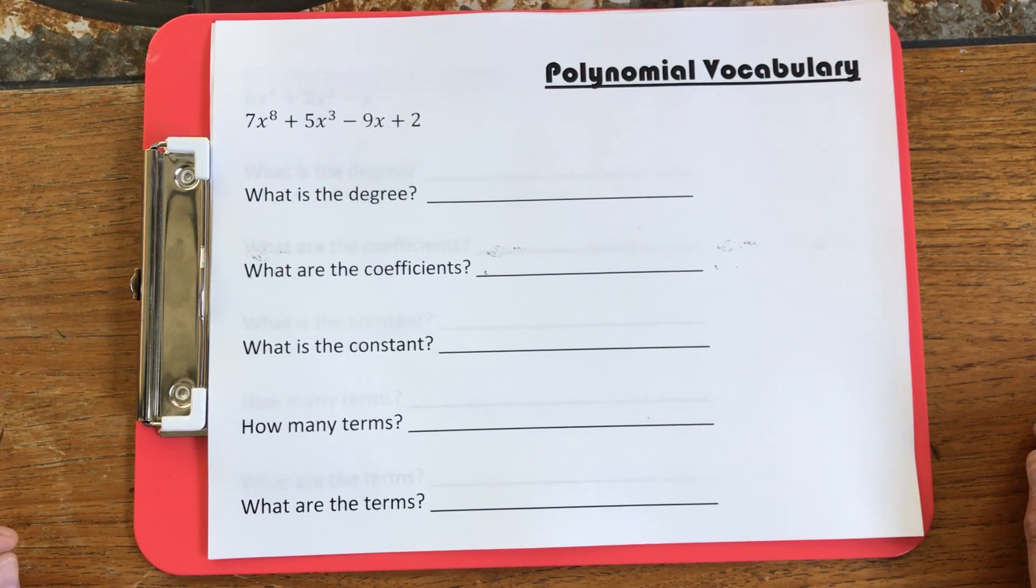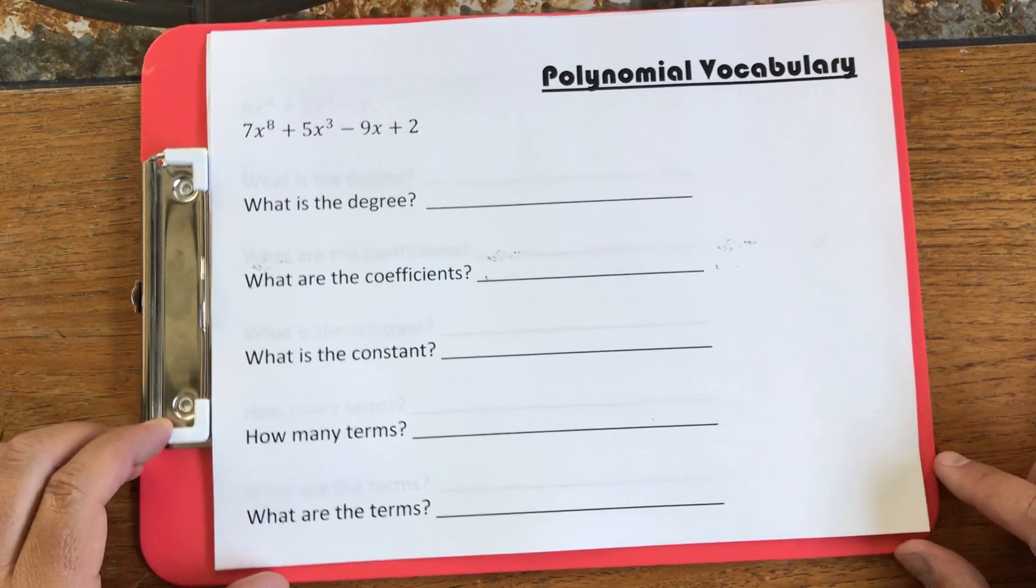What we're going to work on today is what are the different parts of the polynomial called and why is that important? Now, I have a polynomial over here.